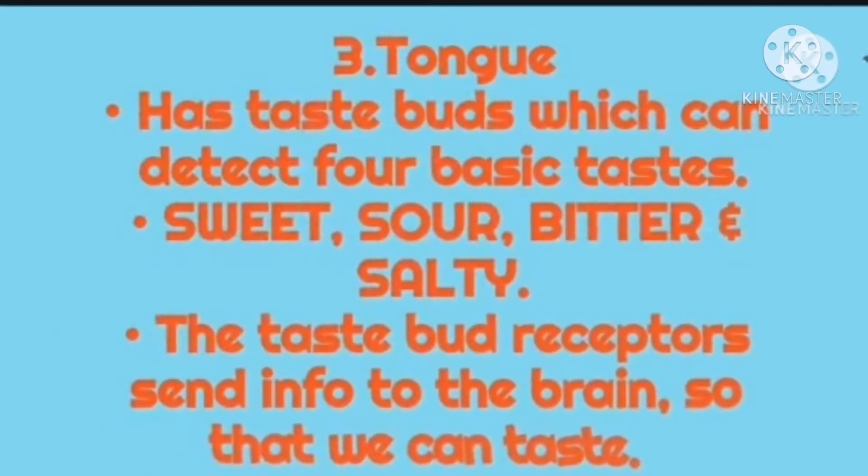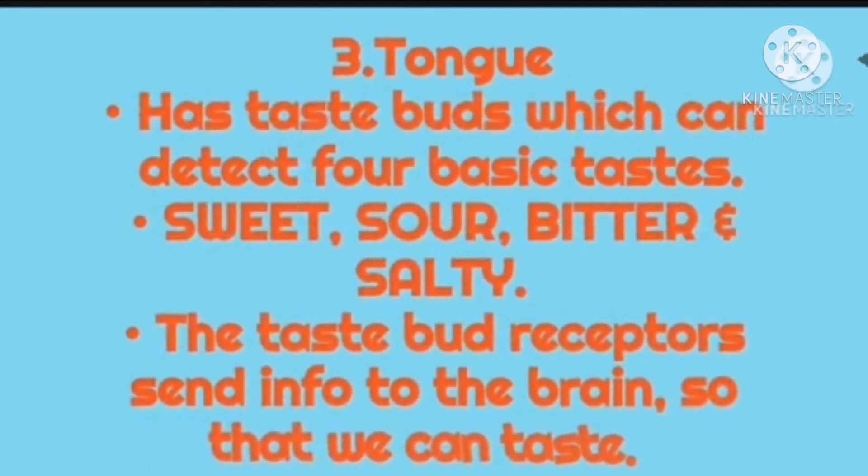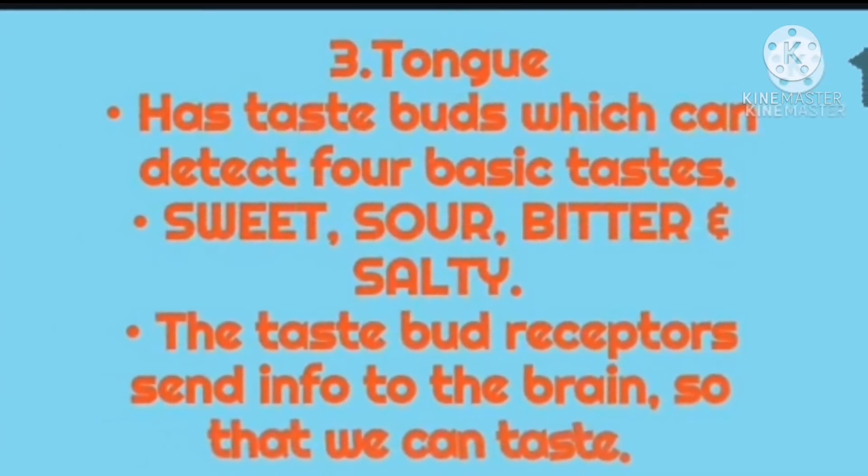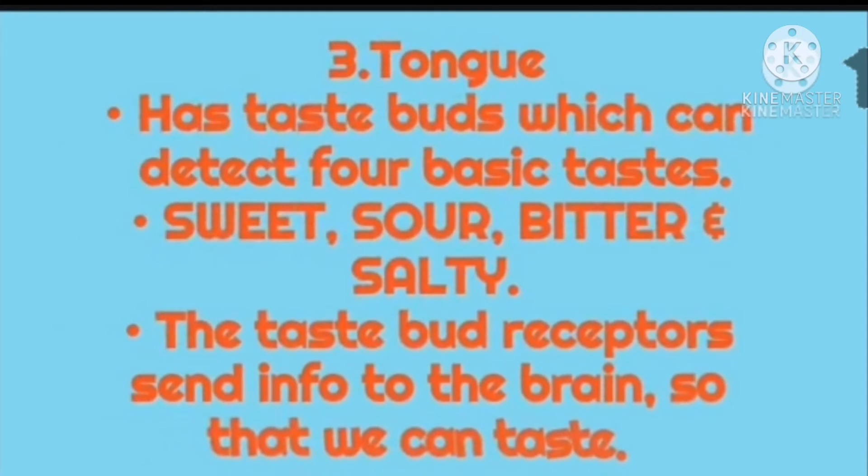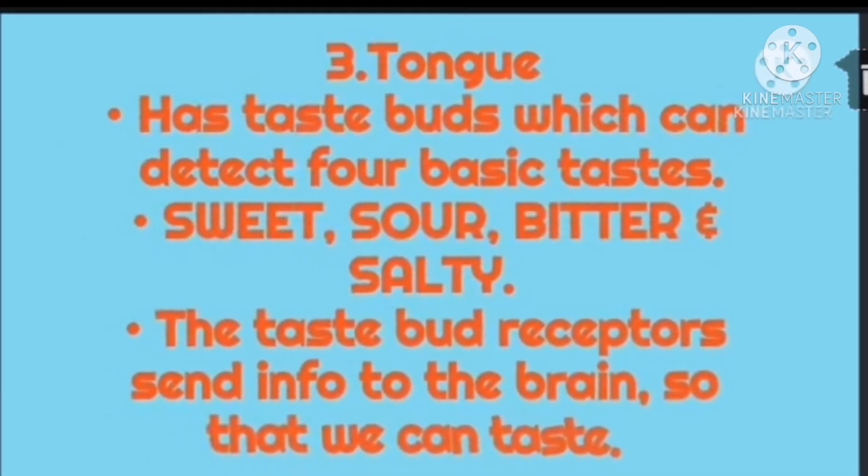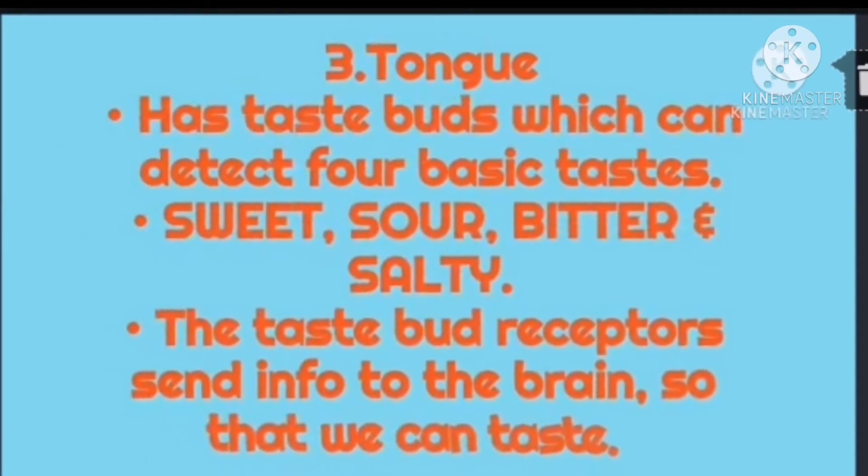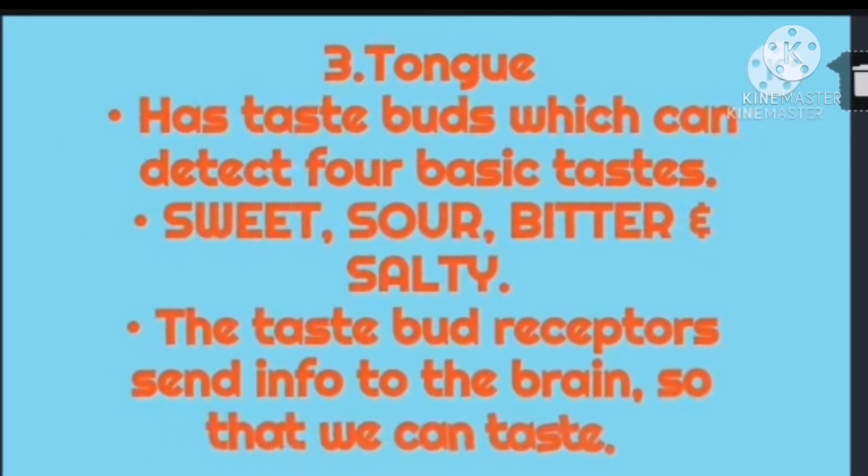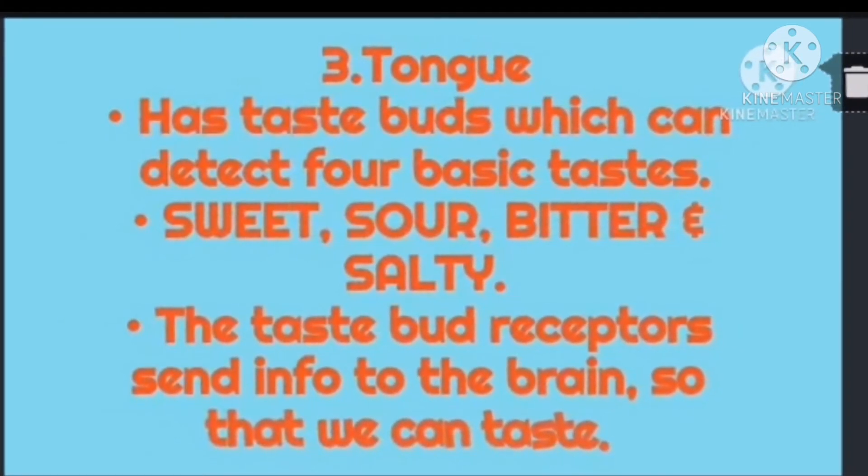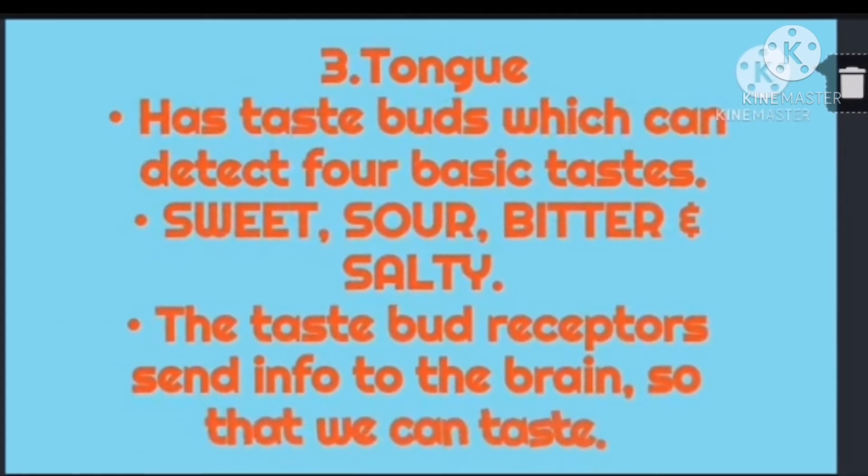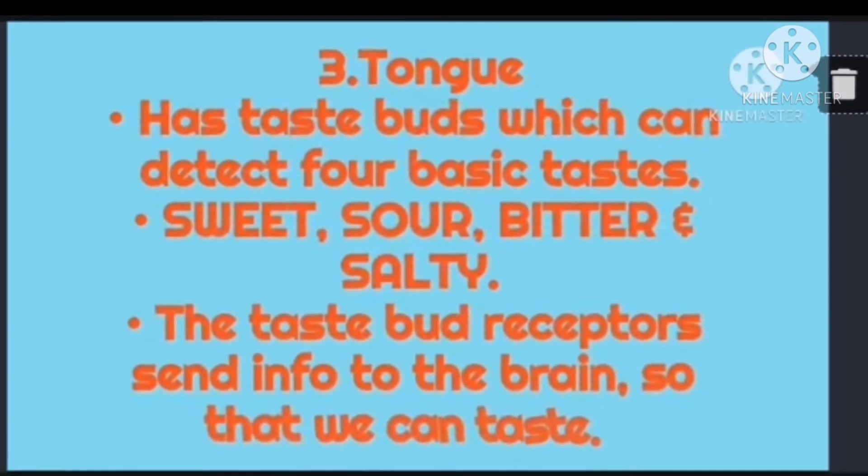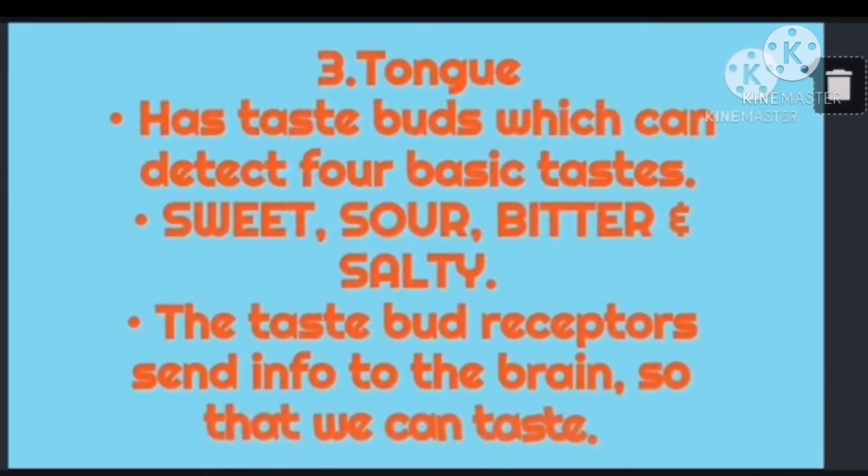Now I would talk about the tongue. It has taste buds which can detect four basic tastes: sweet, sour, bitter, and salty. The taste bud receptors send info to the brain so that we can taste. The tongue is a movable muscular organ. It plays an important role in the chewing and swallowing of food.